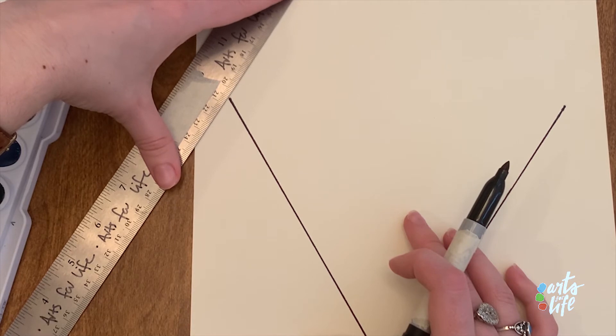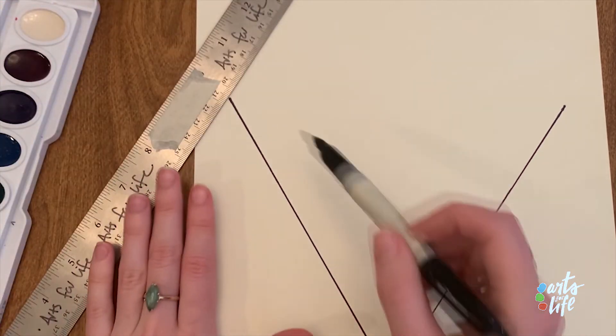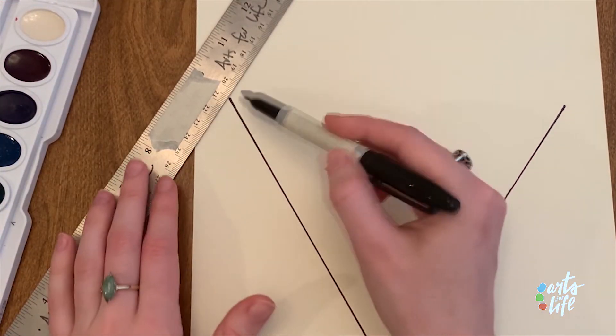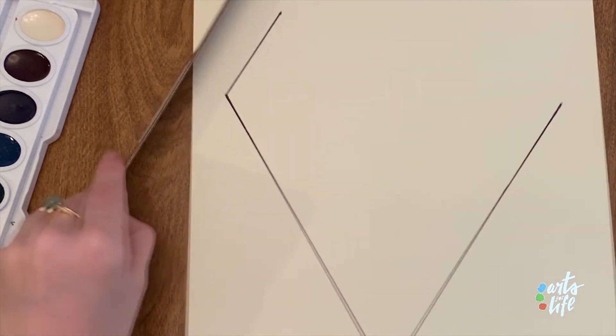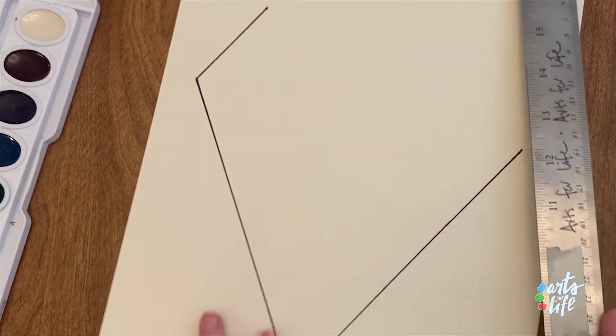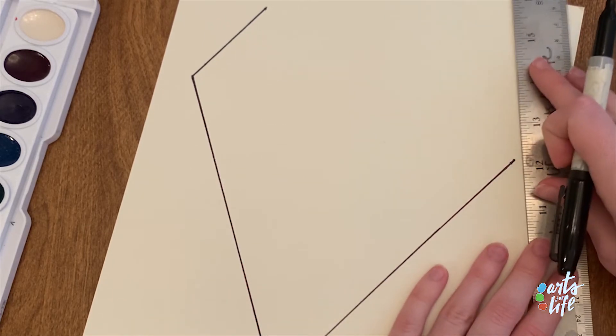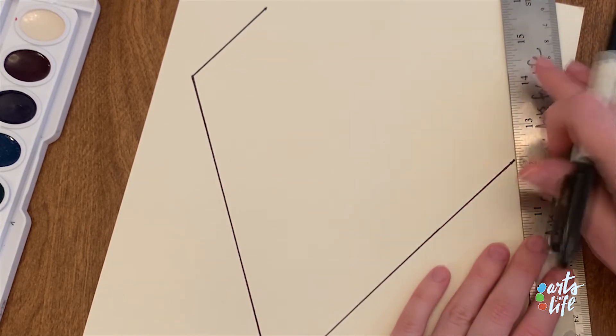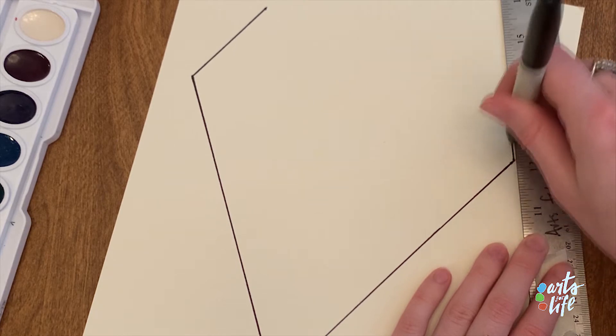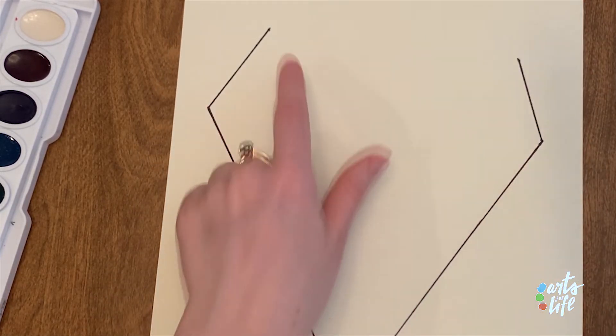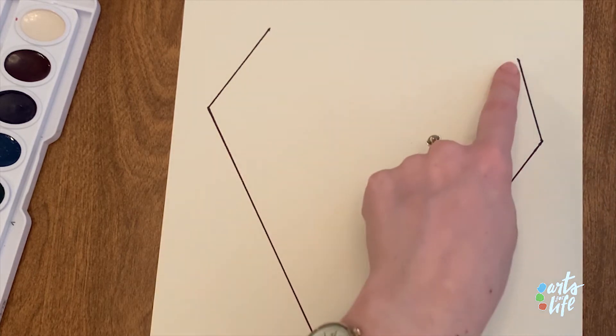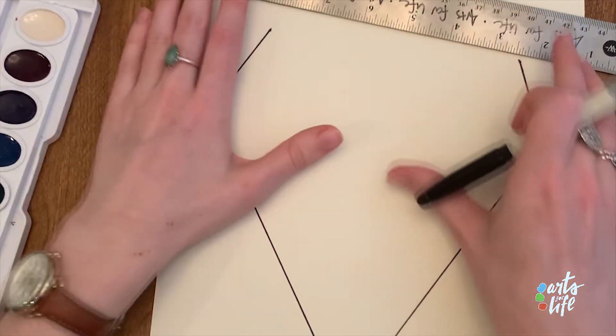So I'm going to take my ruler, I'm going to make a line kind of diagonal from this one and draw that point. And then I'm going to take this side and do something similar. It might be a little shorter. All right, and then from there I'm going to connect this point with this point to make the top.